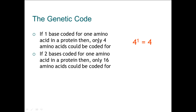But if you use two bases in a row, then you could produce 16 combinations. By this I mean the code could be AA, AT, AC or AG, and so on. In total, using two bases, there are 16 codes that you could have — but that is not enough to code for the 20 amino acids you need.